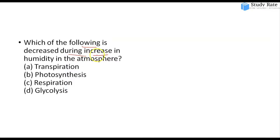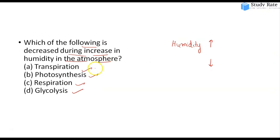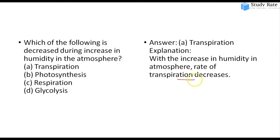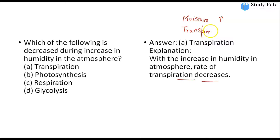The next question: Which of the following decreases when humidity of the atmosphere increases? Options include transpiration, photosynthesis, respiration, or glycolysis. Humidity means increased moisture content in the atmosphere. If humidity increases, transpiration decreases — water loss from plants is reduced because moisture is already present in the air. Transpiration occurs due to water potential difference, so when humidity rises, transpiration from plants decreases.